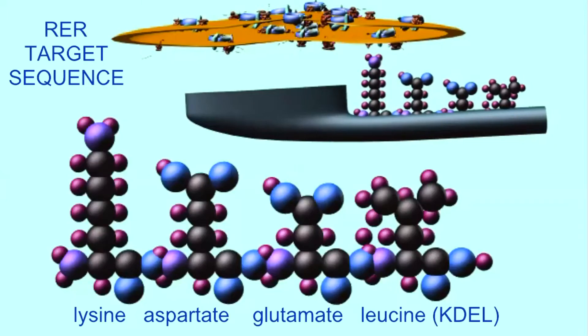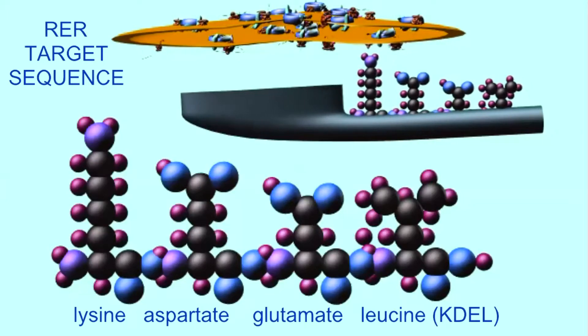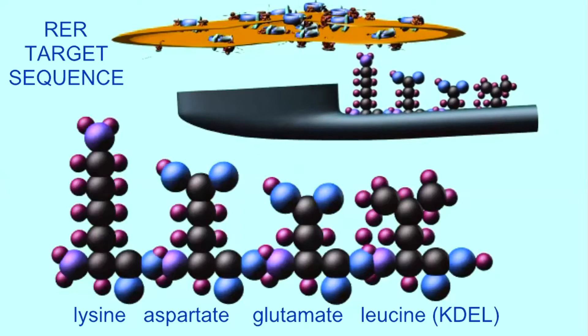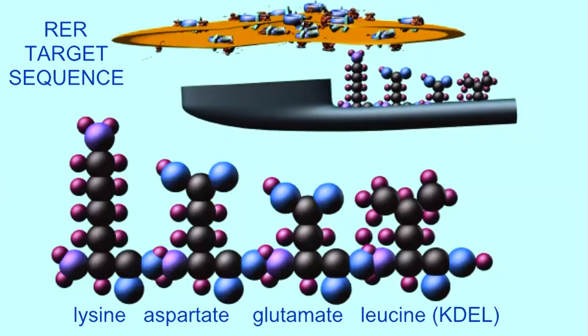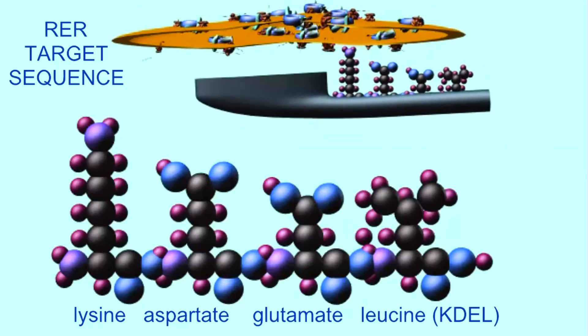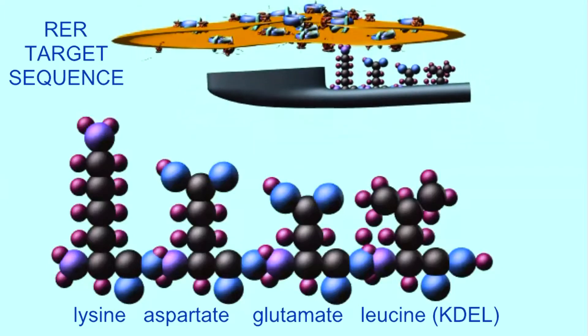A sequence of four amino acids known as K-DEL, which is lysine, aspartate, glutamate, and leucine. This sequence is important in targeting proteins for the rough endoplasmic reticulum.